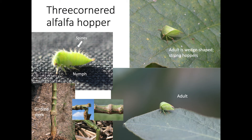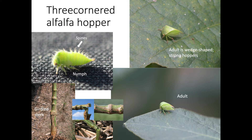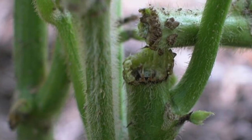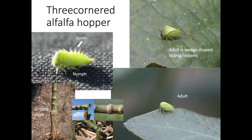The adult three-cornered alfalfa hopper is a green, wedge-shaped insect about a quarter inch long and is an occasional pest of soybeans. Nymphs are similar but smaller and have spines along the back. Adults are very mobile and strongly hop when disturbed. Adults and nymphs feed by inserting their piercing-sucking mouthparts and girdling the circumference of stems or leaf petioles. Plants may snap over while walking through the field or during a storm if three-cornered alfalfa hoppers have girdled the main stem of plants when they were less than 10 to 12 inches tall. Lodging is often observed long after the girdle was made. Feeding does not cause yield loss unless lodging occurs, especially when lodging occurs during the mid or late reproductive stages of soybean growth.